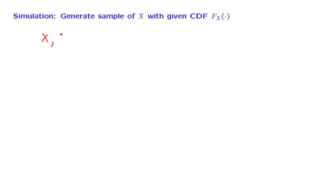Simulation is an important tool in the analysis of probabilistic phenomena. For example, suppose that x, y, and z are independent random variables, and you're interested in the statistical properties of this random variable.